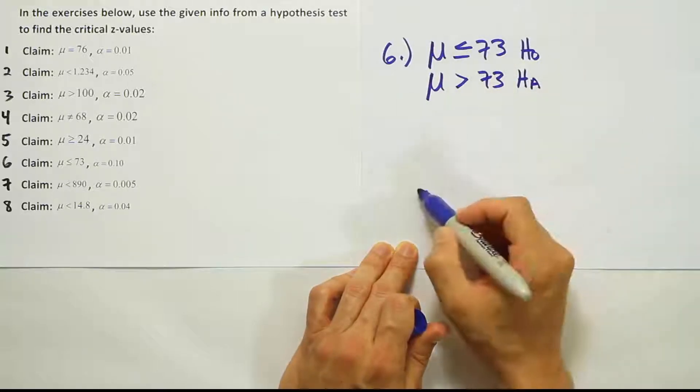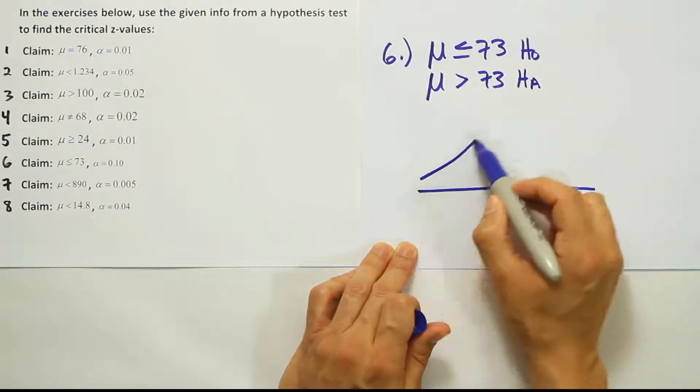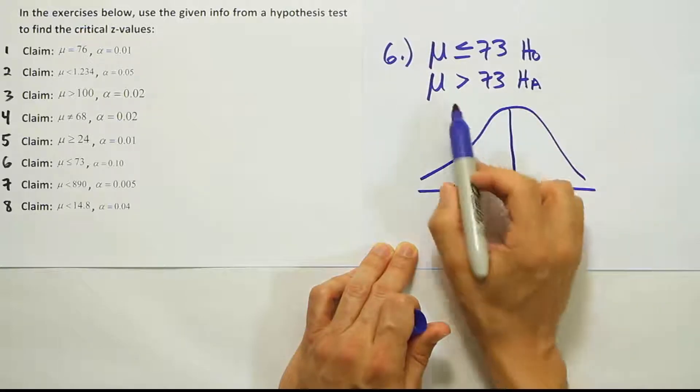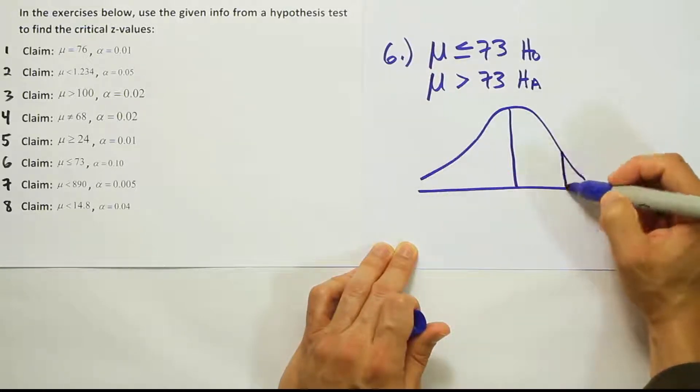All right, so now if that is HA, then we draw the bell curve, and we know that because HA has a greater than symbol, we'll be dealing with a right-tailed test.